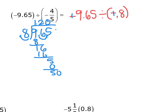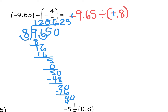Continuing the long division of 96.5 by 8: bring down zeros as needed — 8 into 50 goes 6 times (6×8=48), remainder 2; bring down a zero, 8 into 20 goes 2 times (2×8=16), remainder 4; 8 into 40 goes 5 times exactly. So the answer works out to positive 1.20625.